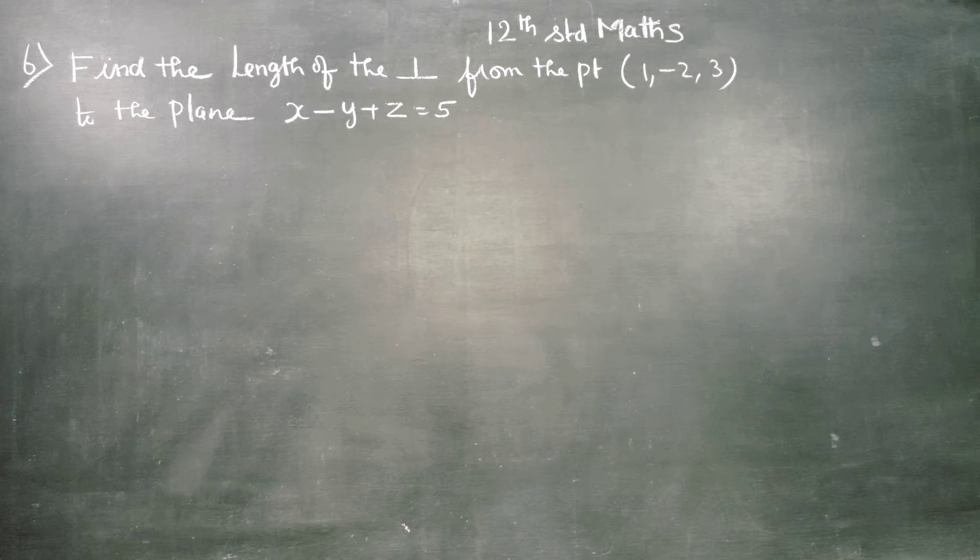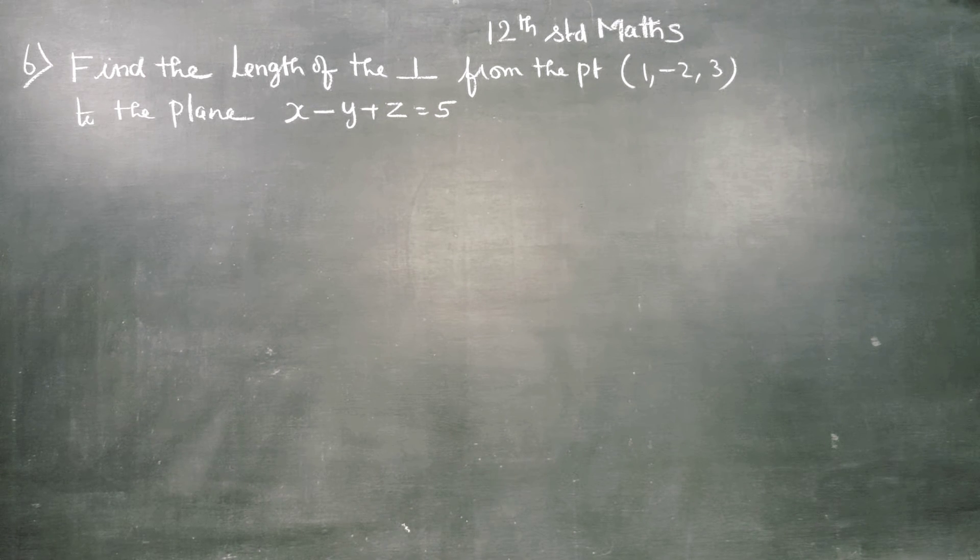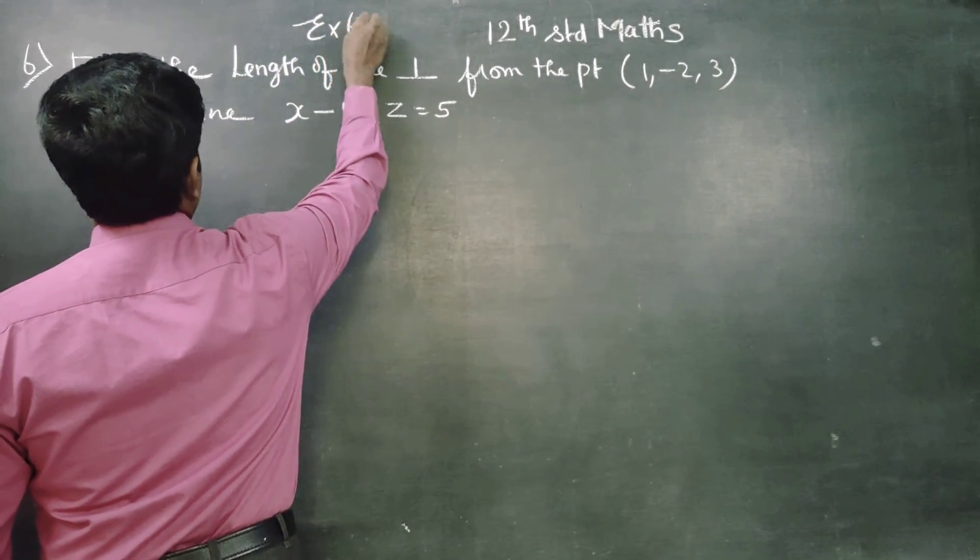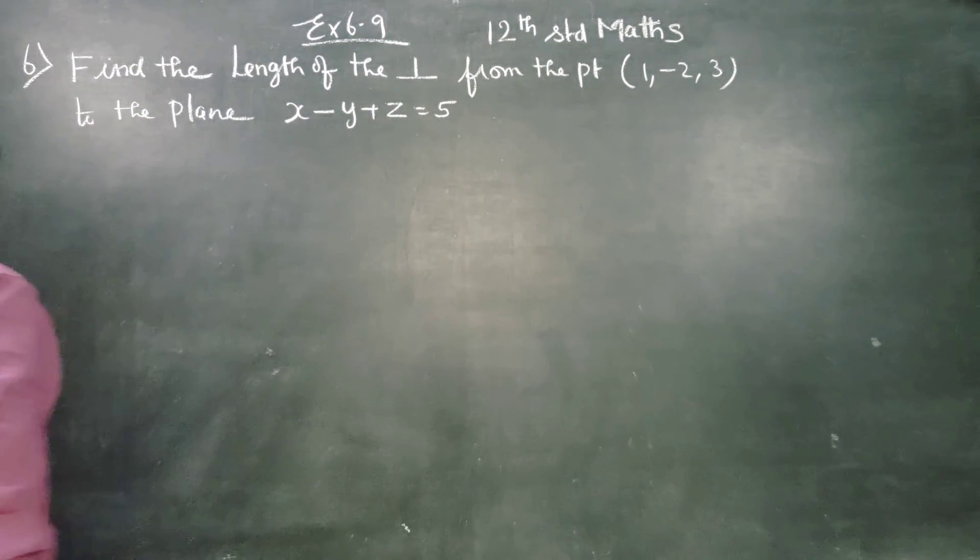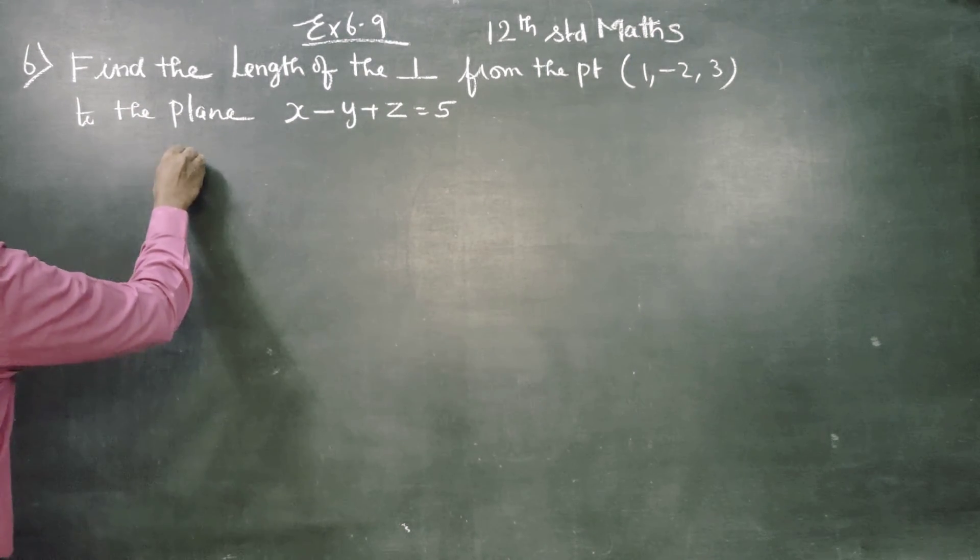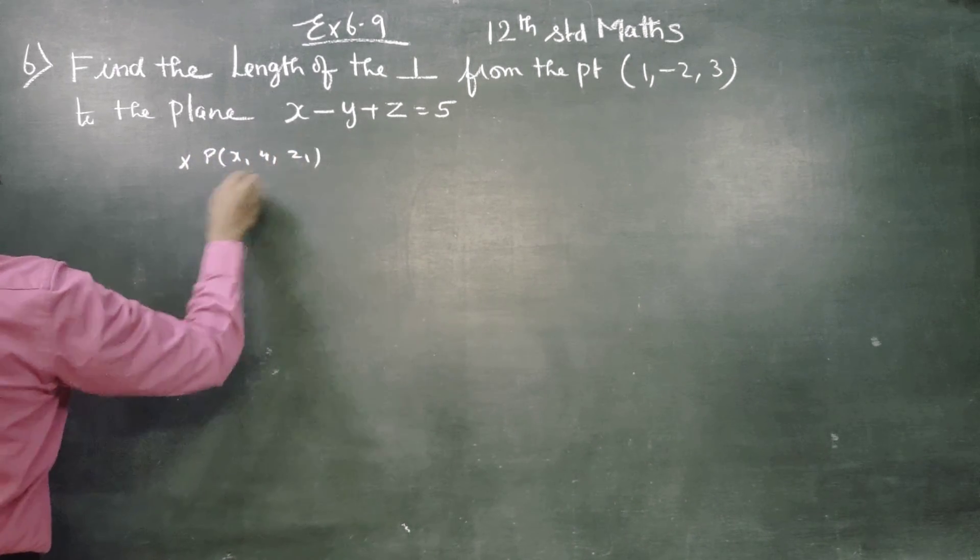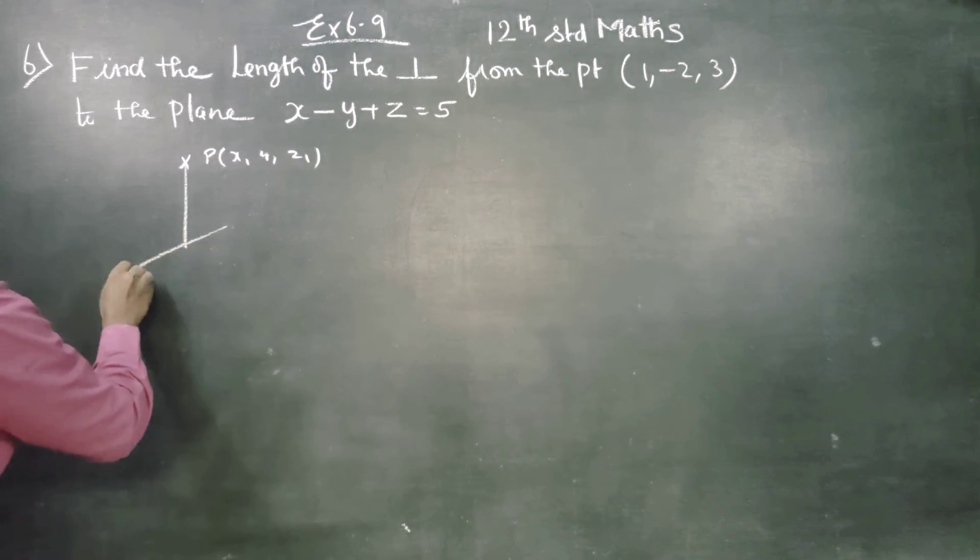12th standard students, exercise number 6.9, the last exercise. Applications of vector algebra. Find the length of the perpendicular from the point. If this is a point (x1, y1, z1) and this is a plane.